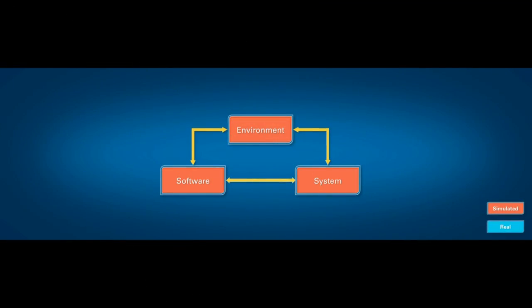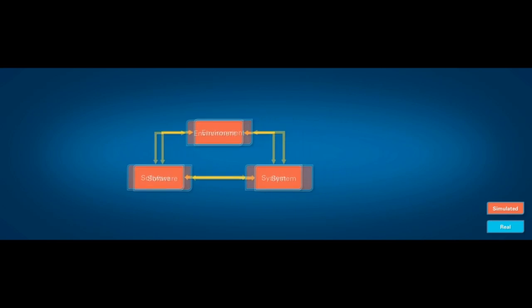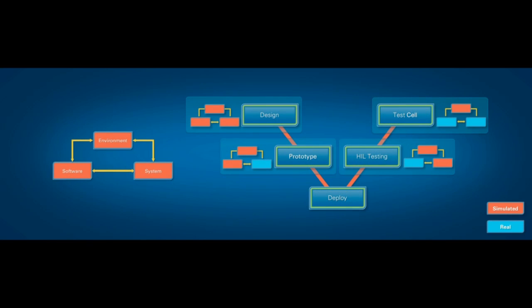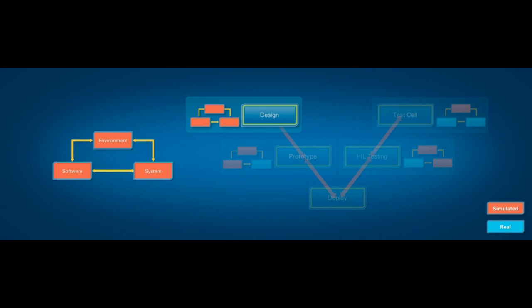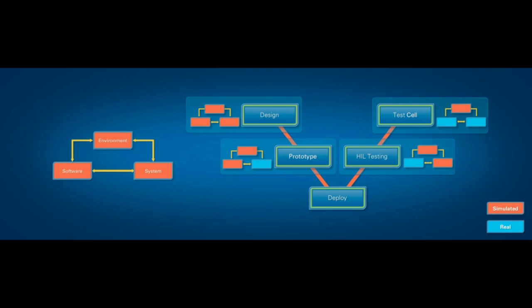One approach is to create a model of the system, software, and environment. Engineers can then leverage these models during the embedded software development process known as the V-diagram. The basic idea is to start with requirements development and design of a control strategy, move on to prototyping, deployment to production hardware, and then through real-time testing activities such as hardware-in-the-loop testing and test cell validation. The goal is to enable system-level testing at each step with a different mixture of real and simulated systems. During the design phase everything is simulated, and at each subsequent step, real components replace simulations as they become available.